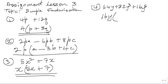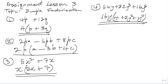16Y into 64Y is 4, plus 16Y into 32Y cubed is 2Y squared, plus 16Y into 16Y to the 5th is Y to the 4th. So the factors are 16Y and 4 plus 2Y squared plus Y to the 4th. That's how we factorize that one completely.